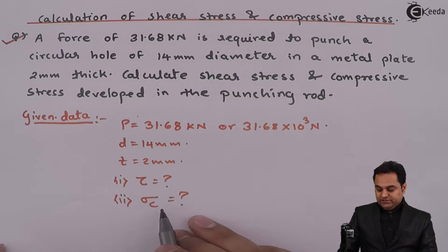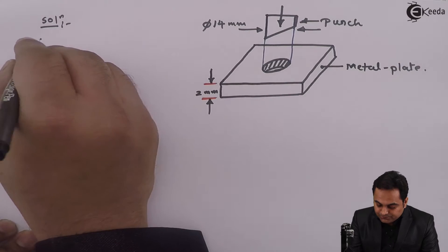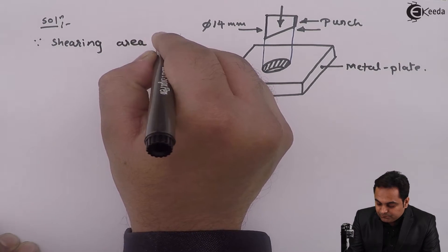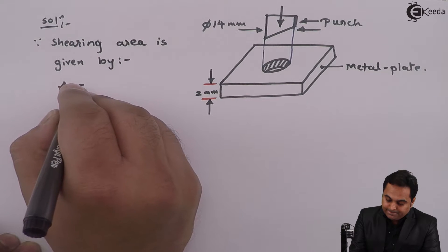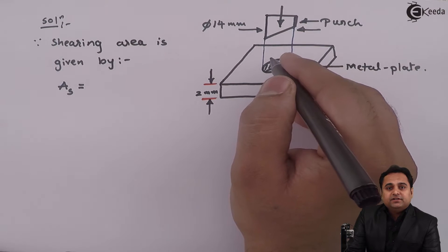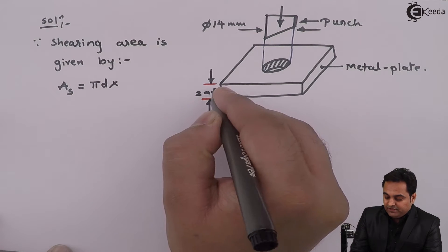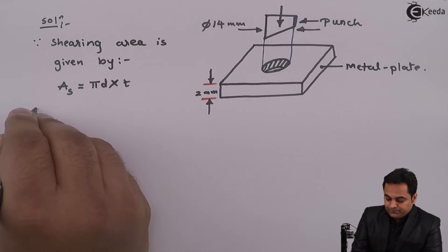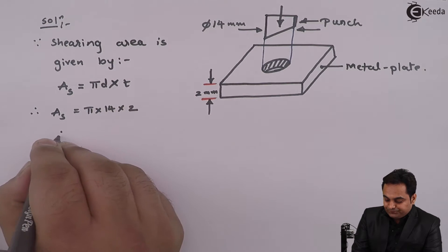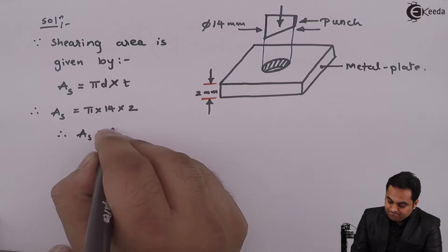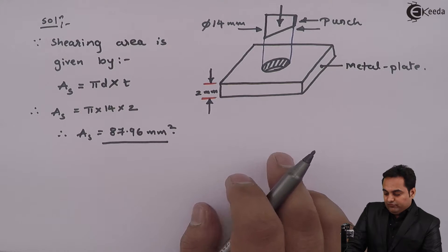First I will calculate the shearing area and the resisting area in compression. The shearing area, As, is the circumferential area, which is the circumference pi×D multiplied by the thickness of the plate, so it is pi×D×T. Here D is 14 and T is 2, so the shearing area comes out to be 87.96 mm².